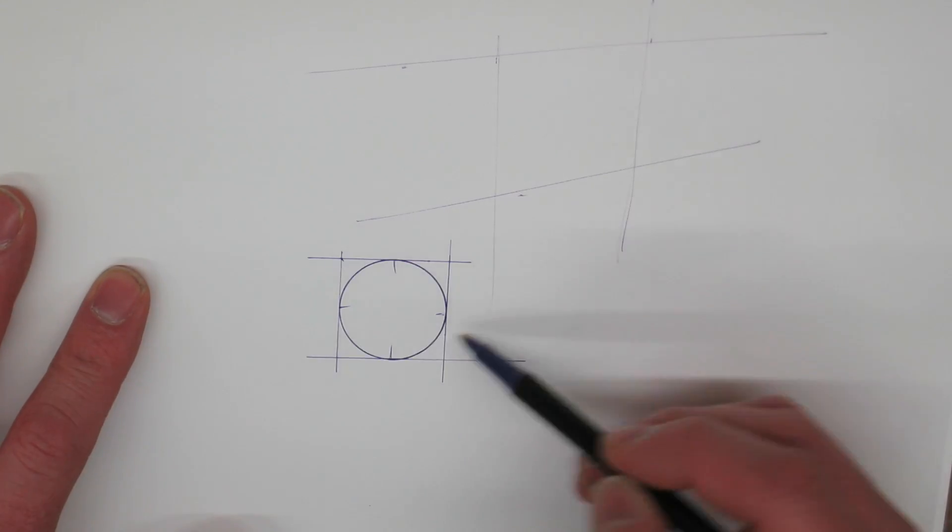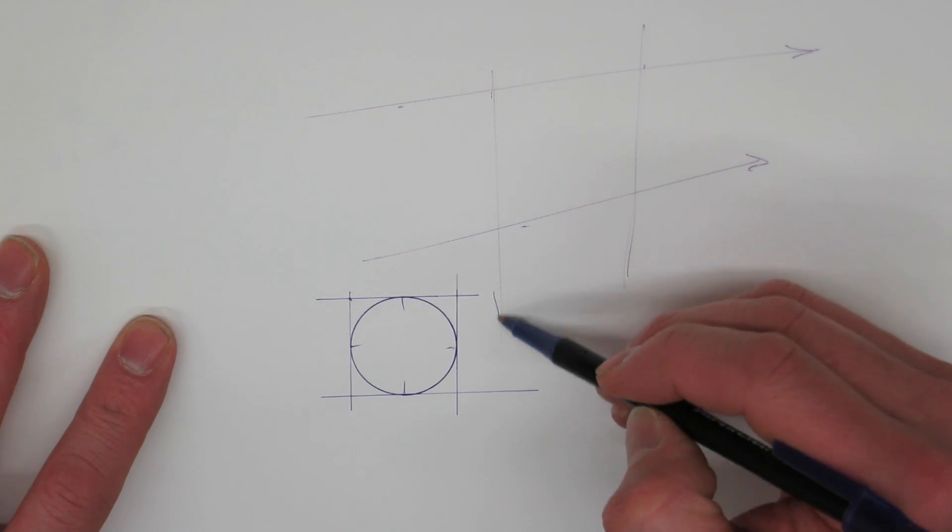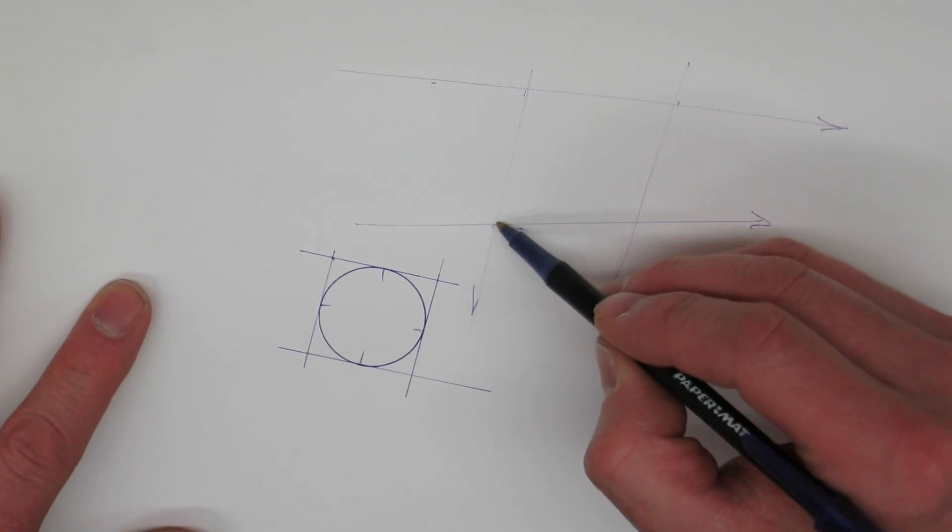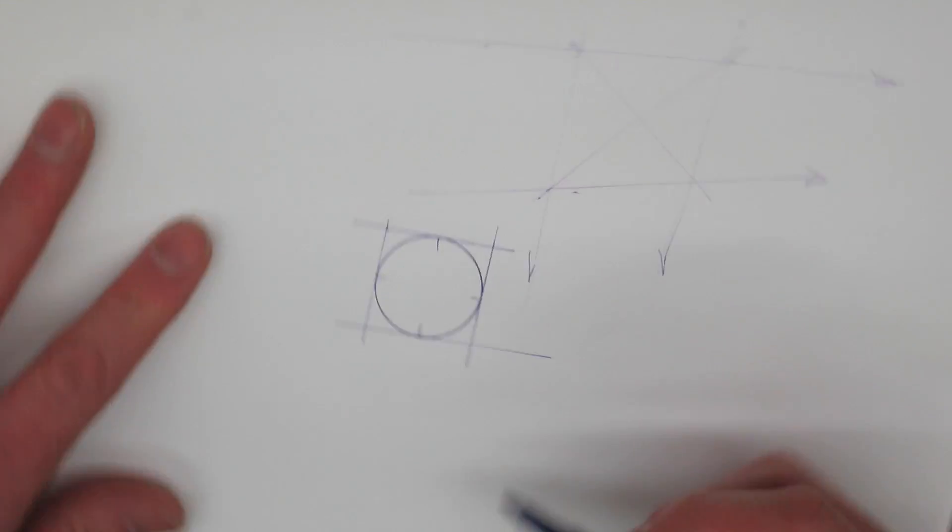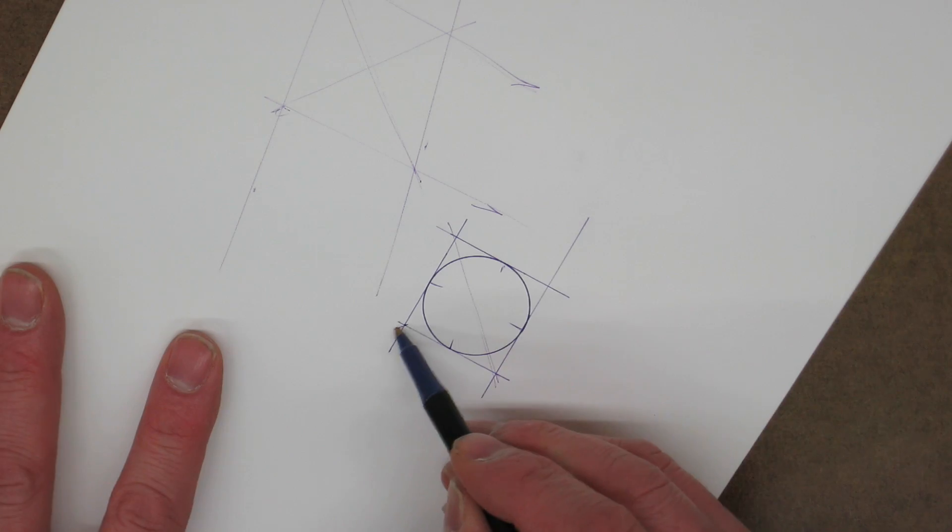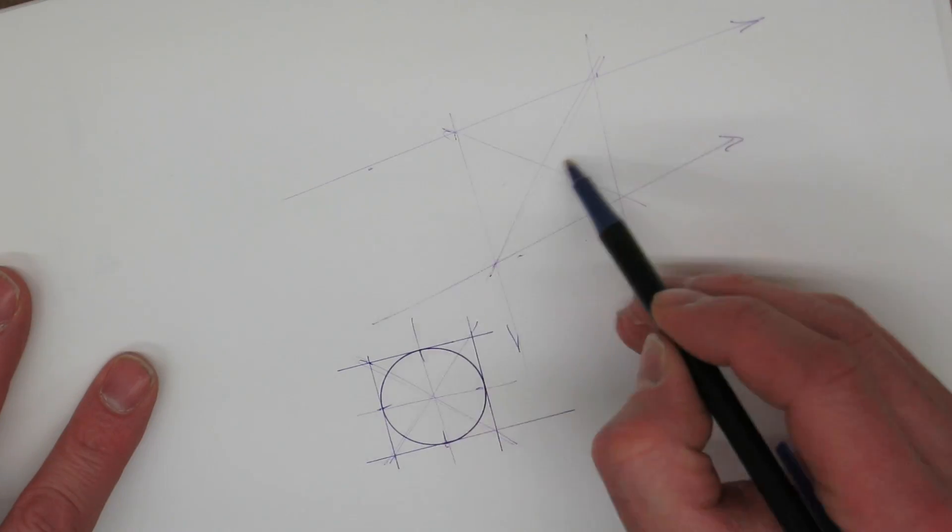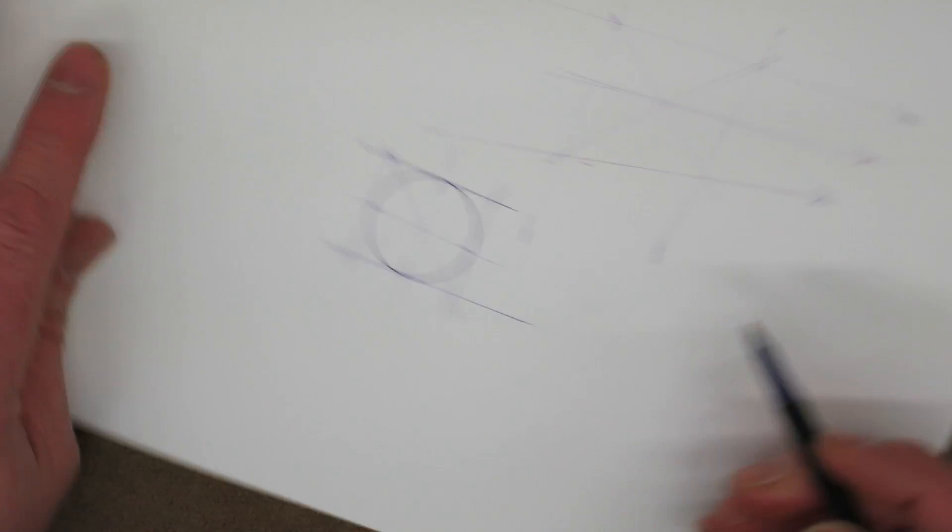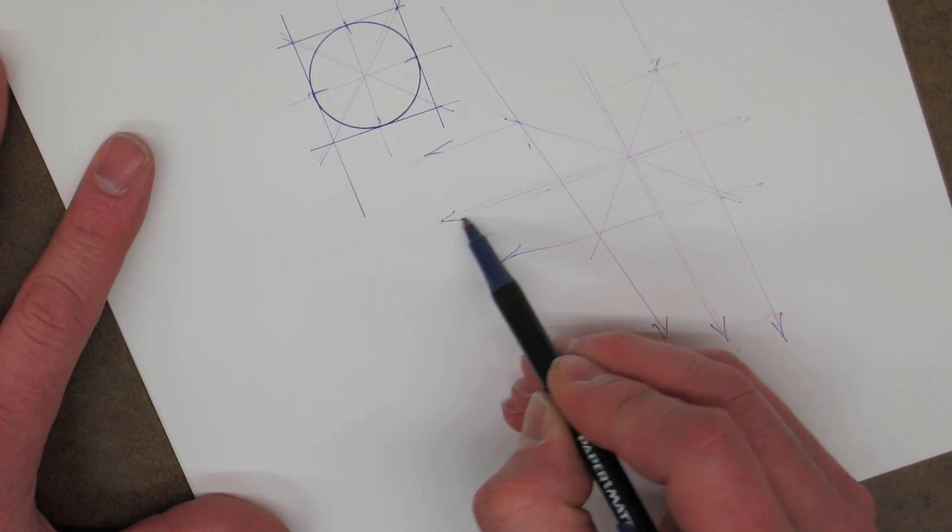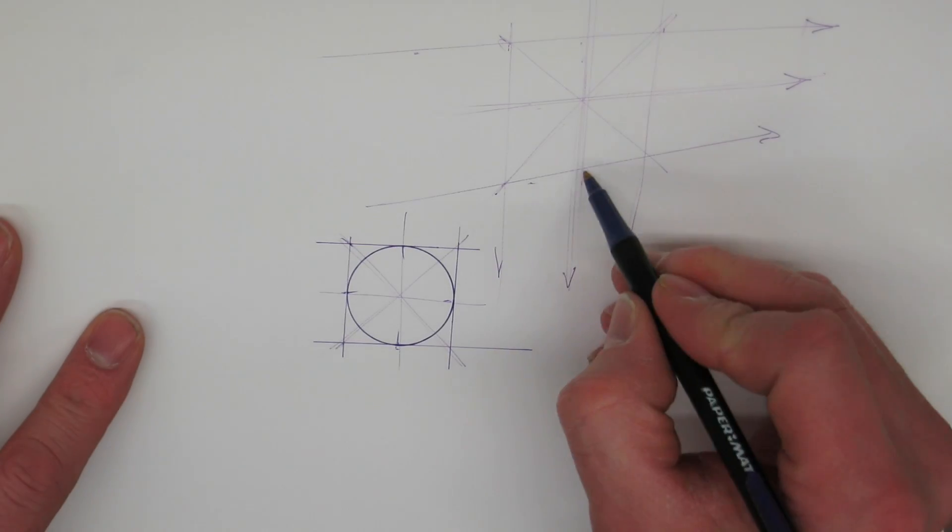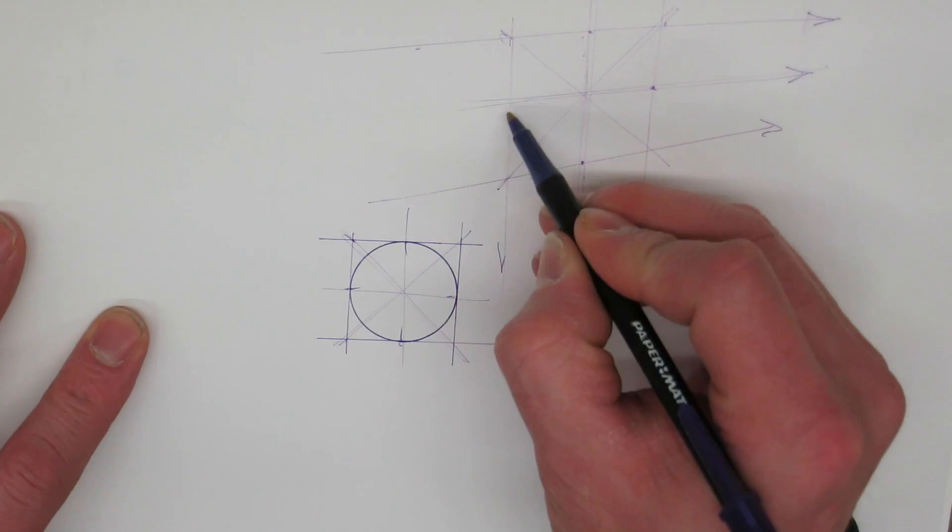go down to my vanishing point below us and a vanishing point off to the right where those lines converge and bisecting the circle to figure out the four points that the circle touches the square. I'm then showing those